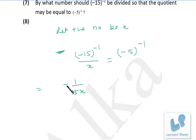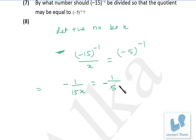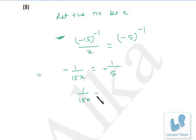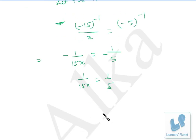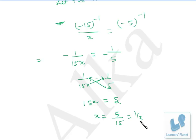The negative sign remains there. Similarly, the right side is 1 upon minus 5. The left hand side is negative and the right hand side is also negative, so both sides will be converted to positive if we multiply both sides by the negative sign. So 1 upon 15x equals 1 upon 5. Now just do a cross multiplication — 15x is equal to 5, so x is 5 by 15, or we can say 1 by 3.